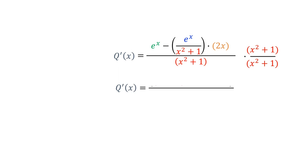So first, we'll need to distribute the x squared plus 1 in the numerator to both terms in the numerator of q prime. So when we multiply the x squared plus 1 by the first term, we get x squared plus 1 times e to the x.